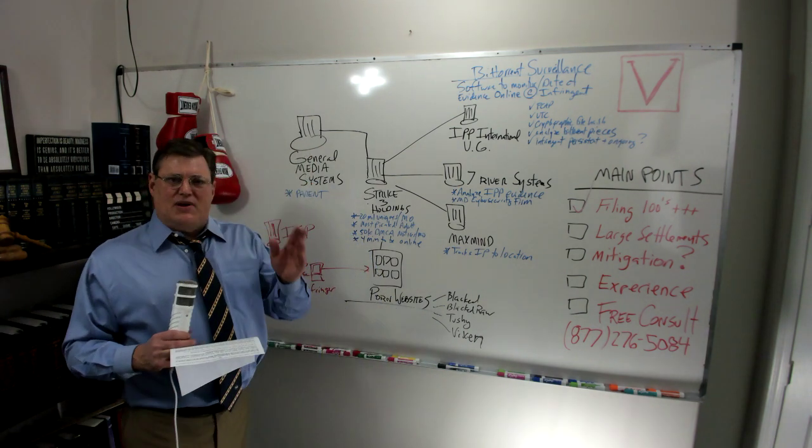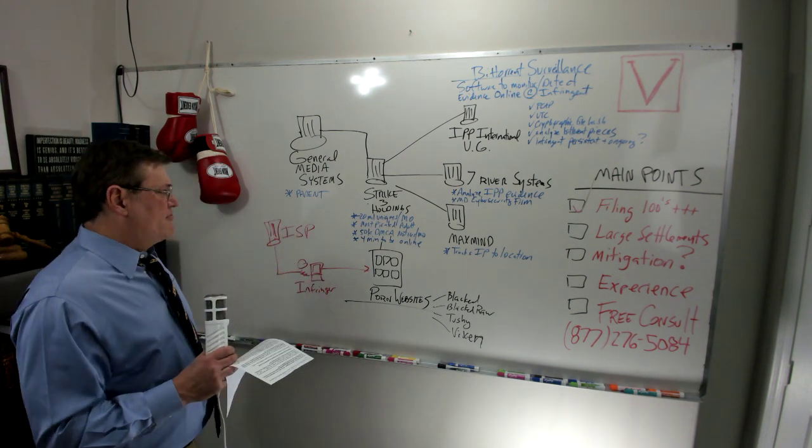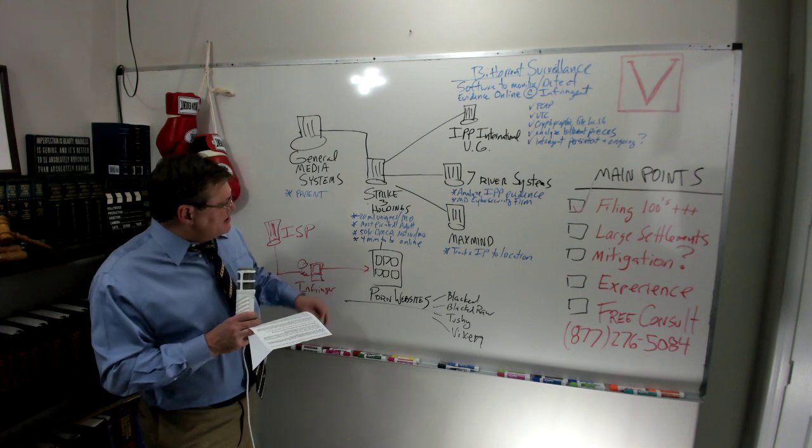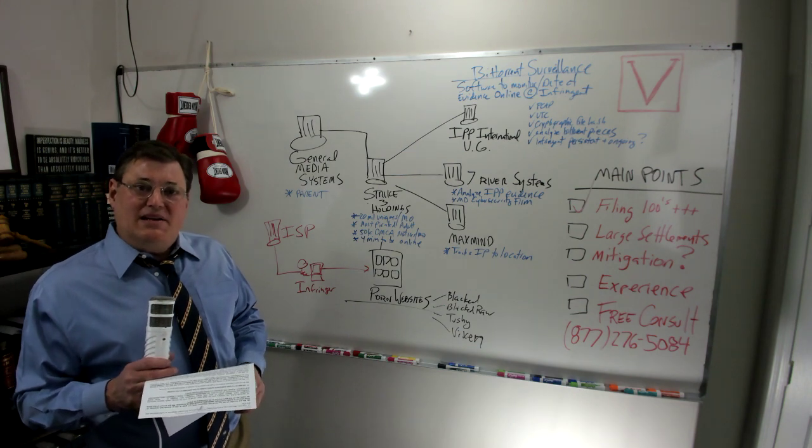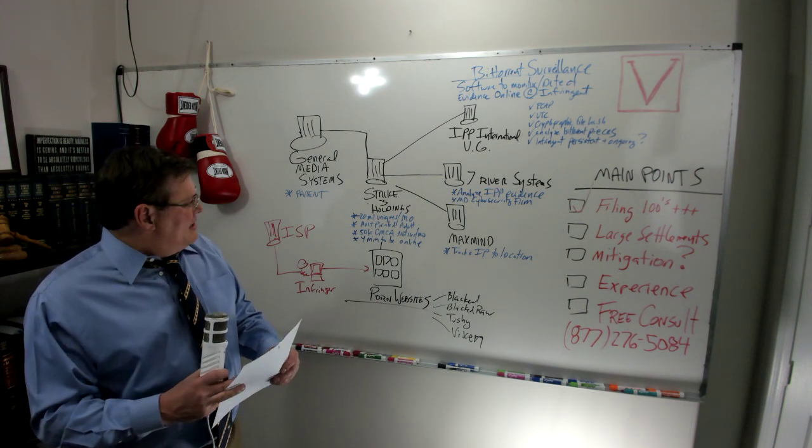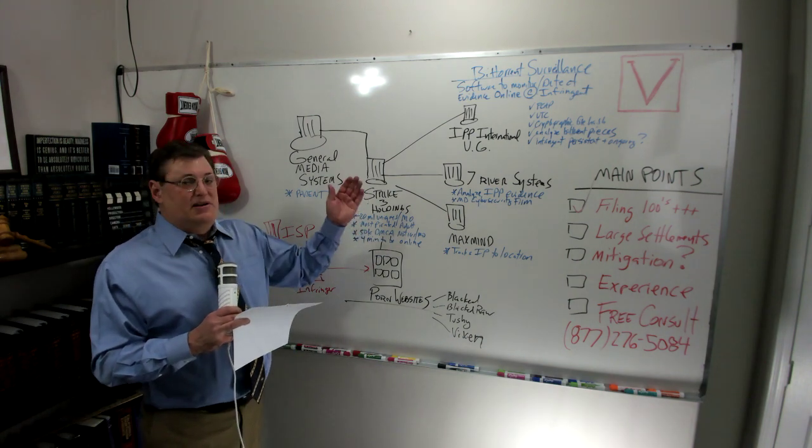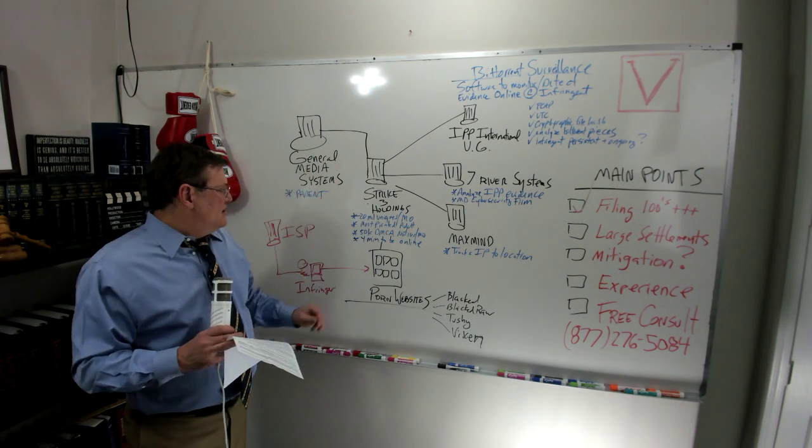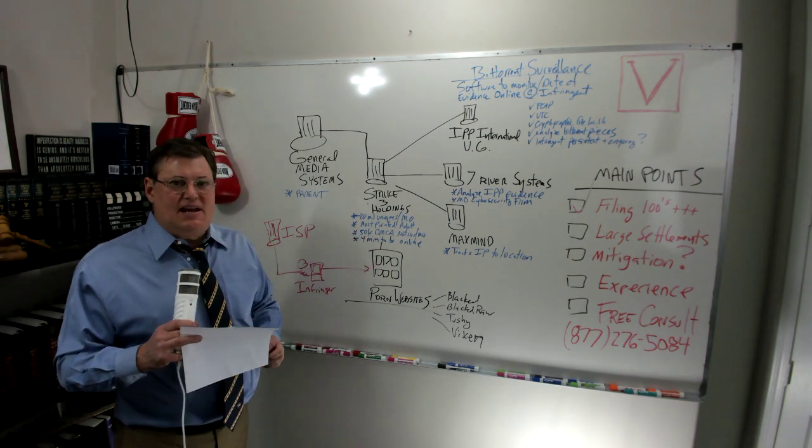We have Strike Three Holdings. We have Malibu Media. Those are your two major filers in our federal court system. So, you have Strike Three Holdings, as I have some bullet points here for you. They claim 20 million unique visitors per month. That's quite a few. That's like a staggering figure. But it was in their declaration, which means it was under oath. And they claim to be the most pirated adult content online. They claim to be the number one seller of adult DVDs. And this one also kind of took me by surprise. They claim 50,000 DMCA notices per month.